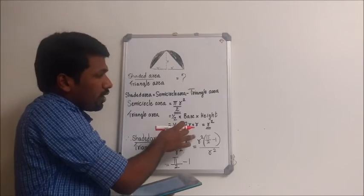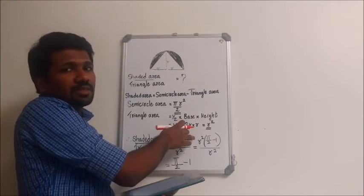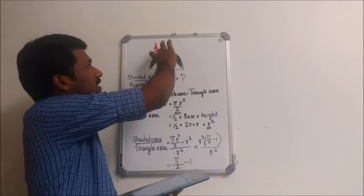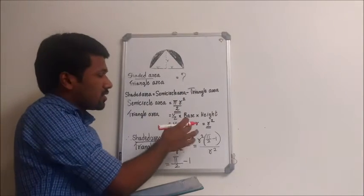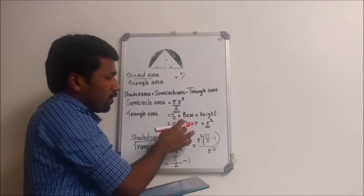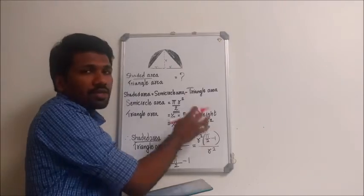Now, what is the height of this triangle? Height of this triangle is again the radius of the semicircle itself. That is half into 2r into r. When you simplify it, you will get it as r squared.